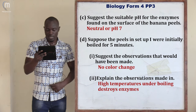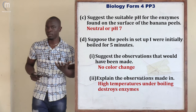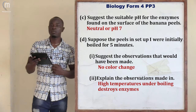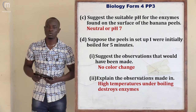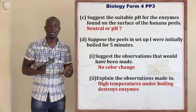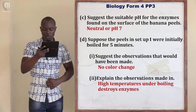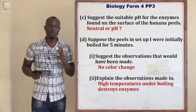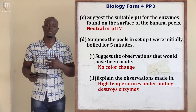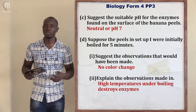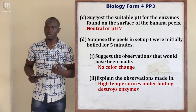Part D asks: suppose the peels in setup J were initially boiled for 5 minutes. Roman 1 asks: suggest the observations that would have been made — there would be no colour change. Roman 2 asks: explain this observation. High temperatures denature and destroy enzymes. Since high temperatures destroyed the enzymes in the banana peel, this would prevent them from reacting with atmospheric oxygen, and therefore no brown coloration or colour change of the banana peels would be observed.